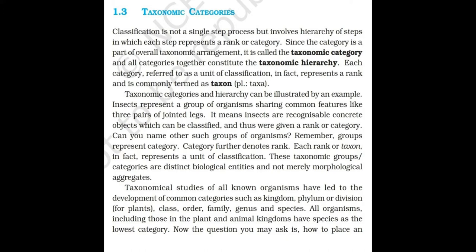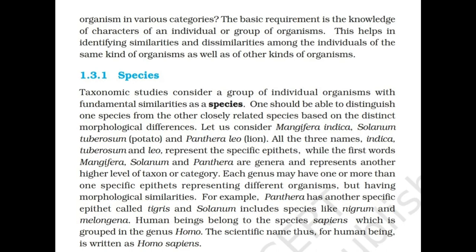These taxonomic groups or categories are distinct biological entities and not merely morphological aggregates. Taxonomical studies of all known organisms have led to the development of common categories such as kingdom, phylum or division for plants, class, order, family, genus, and species. All organisms including those in the plant and animal kingdoms have species as the lowest category. The basic requirement to place an organism in various categories is the knowledge of characters of an individual or group of organisms.